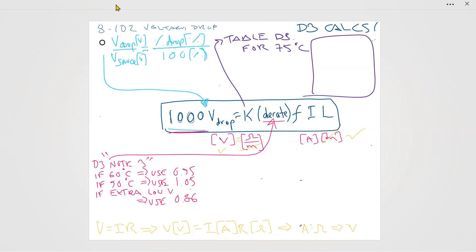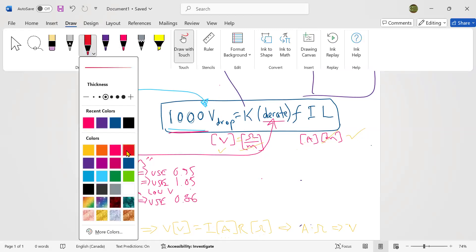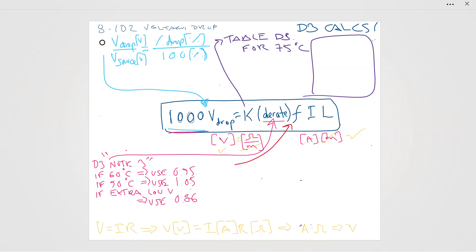Now what is F? Well, F is a voltage drop factor. It's called D3 note 2. So D3 note 2 actually tells you to do something else altogether. And that is F. So this is the D3 note 2. And it is called the voltage drop factor table. And that table tells us that if it is a DC circuit, F is equal to 2. If it is a one phase AC circuit, F is equal to 2. If it is a three phase circuit, F is equal to 2.